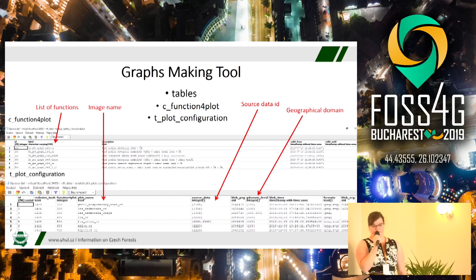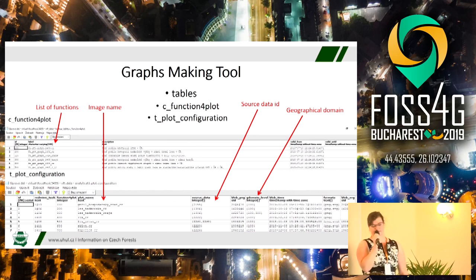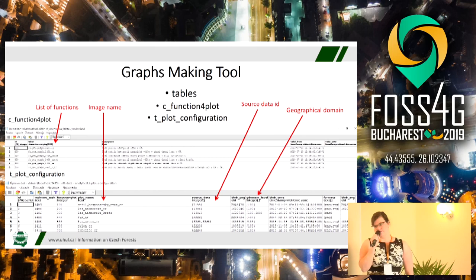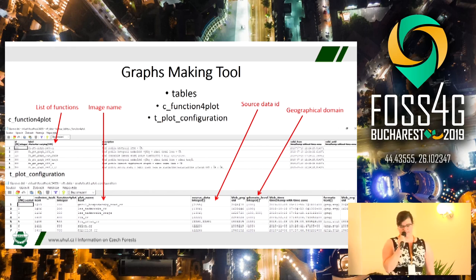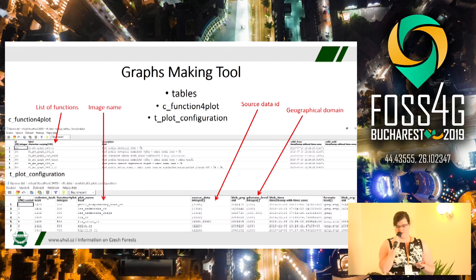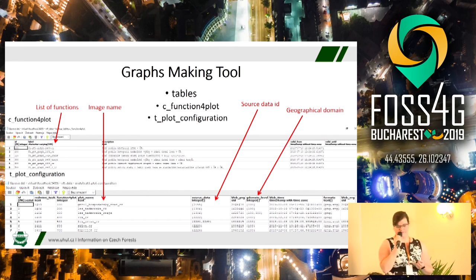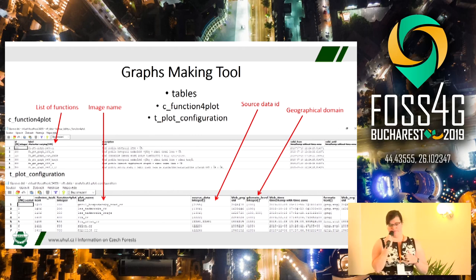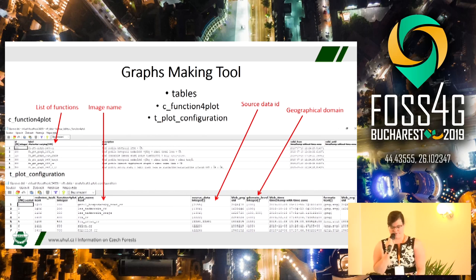Here you can see the tables for graph making. The first one is C-function for plot — it's a table and you can see the list of function names and descriptions. The most important table is also a configuration table, shown at the bottom of this slide. There are stored data about source views, about geographical domain, the name of the resulting plot, and we store the resulting plots in the database in the form of PNG or SVG — it can be both or one of them. Then we download them from this database.